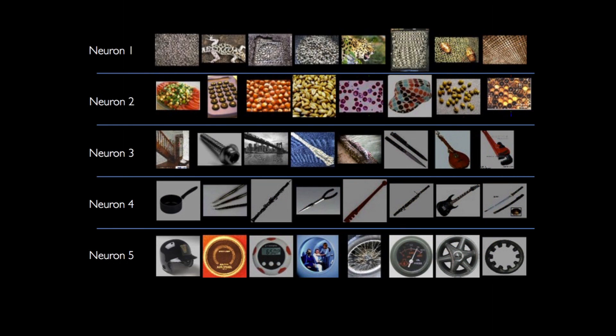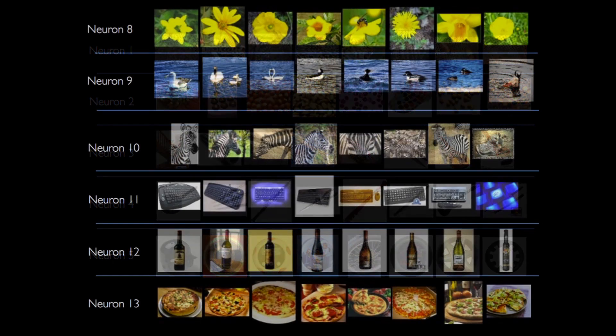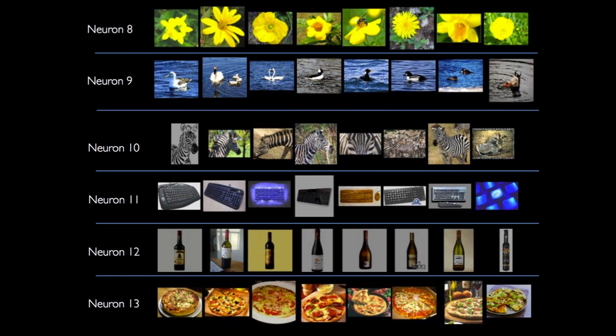And this is from a different set of inputs, not YouTube images. This is a standard set of 16 million images, and they were all clustered together. These are the types of things that come out. You can see some of what the system is doing is picking out textures, like small circles; some of what it's doing is picking out lines, like diagonal lines; shapes like circles; but also higher-level concepts, like flowers and ducks and zebras and wine bottles and pizza and so on. So it's doing a very good job of separating the world out into the types of concepts that are important to us.